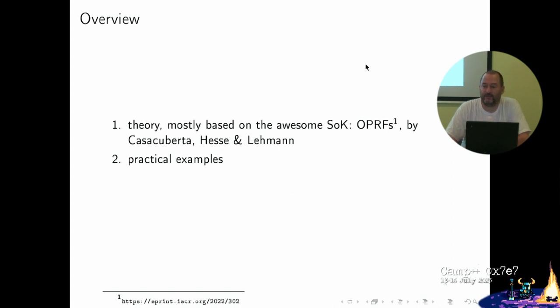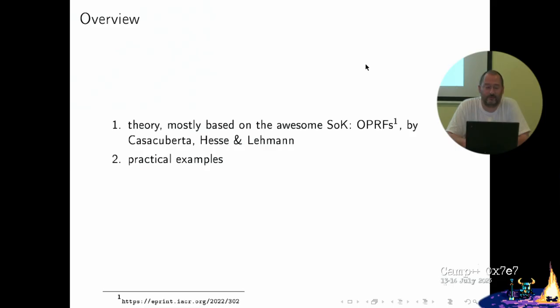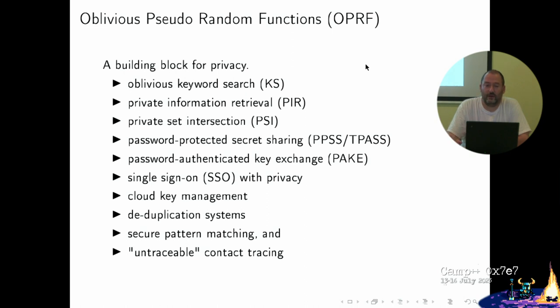Large parts of this talk are based on a paper by Kassab, Kuberta, Hassan, and Lehmann, called Systematization of Knowledge: OPRFs — basically an encyclopedia of everything you need to know about OPRFs. I spent more than a month reading academic papers and all the references in that paper. I had a lot of fun and learned so much. OPRFs can be used for many things, and most importantly they're a building block for privacy — whenever you see an OPRF, there's a big chance it enhances privacy significantly.